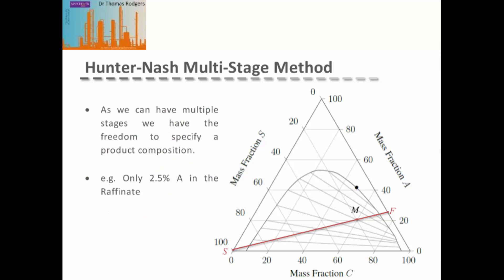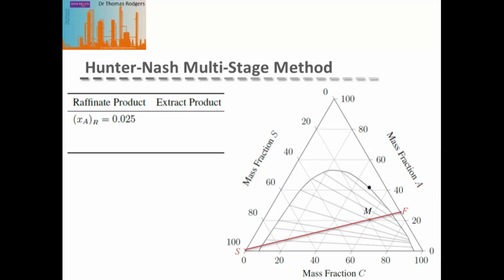In our single stage example, our raffinate and extract products were limited by the equilibrium tie lines of the system. However, in a multi-stage process, because we have multiple stages and multiple equilibriums, we're free to pick a composition of our products. So in this case, we're going to pick that we only want 2.5% of our solute A in our raffinate product. From this, we can plot our raffinate point on our ternary phase diagram. We know that our raffinate product must be on the same side of the equilibrium curve as the feed, and that the product must lie on the equilibrium curve.